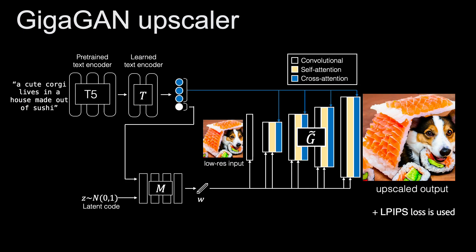Based on the aforementioned modules, we've successfully scaled up StyleGAN2 to accommodate 1 billion parameters. Furthermore, we demonstrate that GigaGAN can be employed as a high-quality yet rapid upscaler. Without any fine-tuning, the GigaGAN upscaler can effectively replace existing diffusion-based upscalers, leading to a significant acceleration.